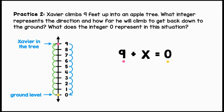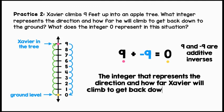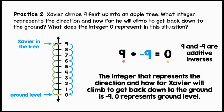And since that's down, we're going to use a negative nine to represent that move. We can say that nine and negative nine are additive inverses. The integer that represents the direction and how far Xavier will climb to get back down to the ground is negative nine. Zero represents ground level.